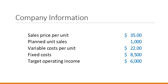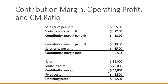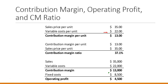First, contribution margin per unit: sales price per unit of $35 minus variable cost per unit of $22 equals contribution margin per unit of $13. Next, the contribution margin ratio: the contribution margin per unit of $13 divided by the sales price per unit of $35 equals a contribution margin ratio of 37.1%.